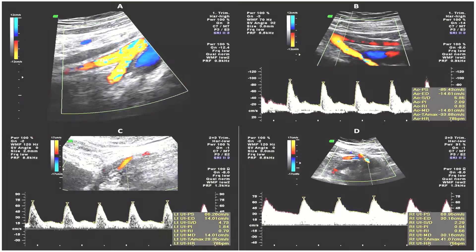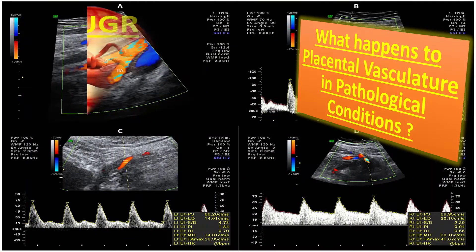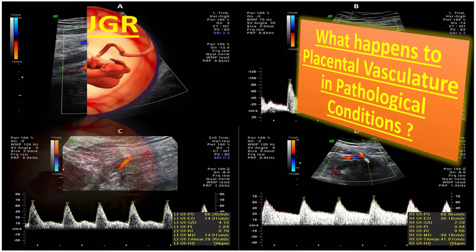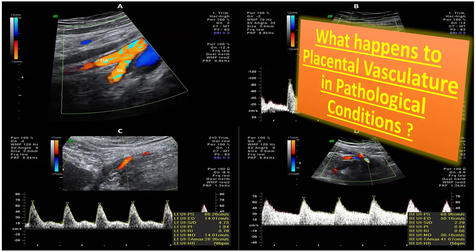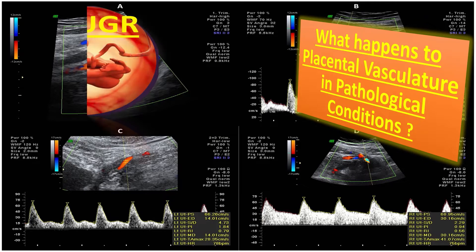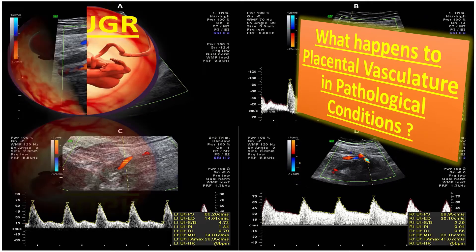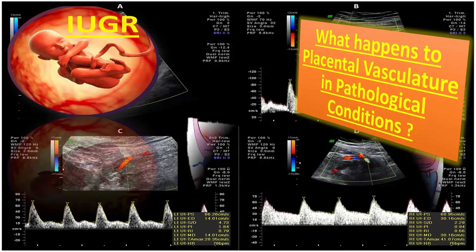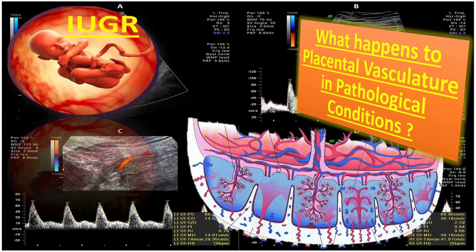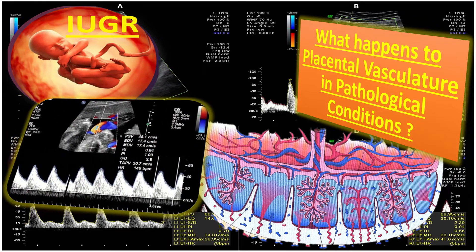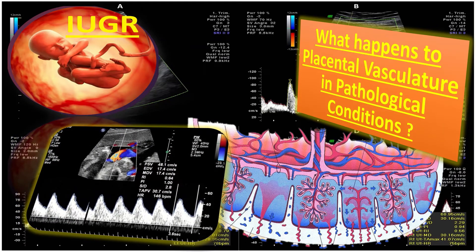So what happens to the placental vasculature in pathological conditions? In pathological conditions like intrauterine growth retardation, placental vasculature either never fully developed its arteriolar branching or undergoes atherosclerotic changes, and these reflect increased placental resistance. Monitoring with umbilical artery Doppler can help improve perinatal outcomes.